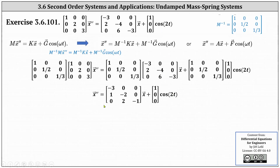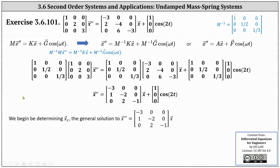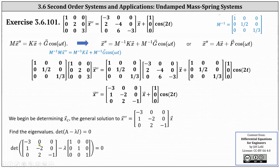Now that we have the equation in the required form, the next step is to find the complementary solution for the associated homogeneous system x double prime equals A times x, where A is that three-by-three matrix. We begin by determining the eigenvalues: we set up the equation det(A minus lambda I) equals zero and solve for lambda. Here, I is the three-by-three identity matrix, and simplifying gives us the determinant of a three-by-three matrix set equal to zero.